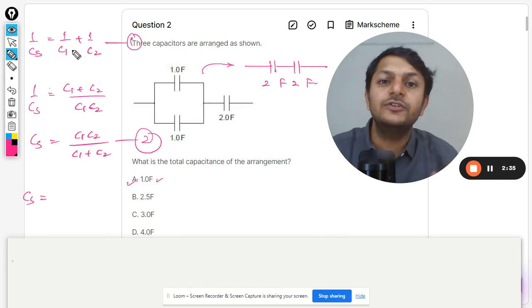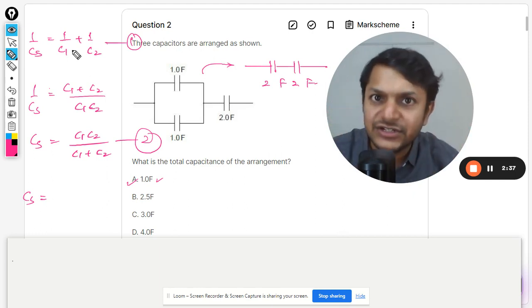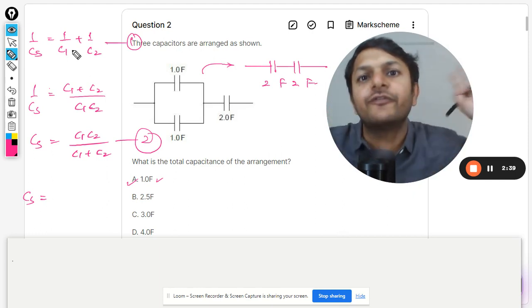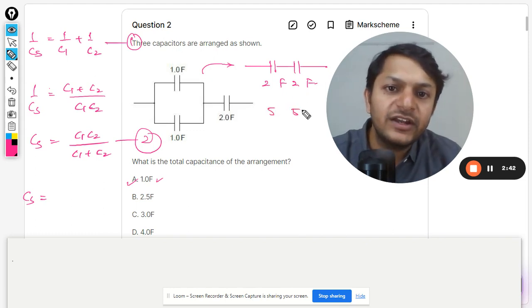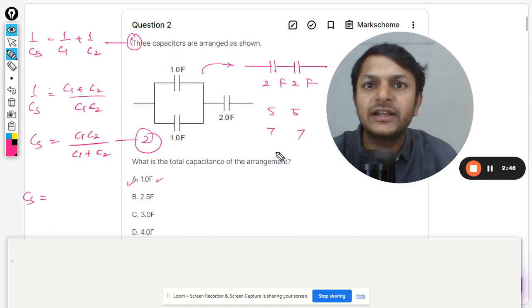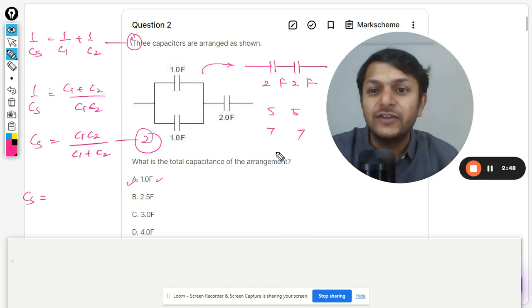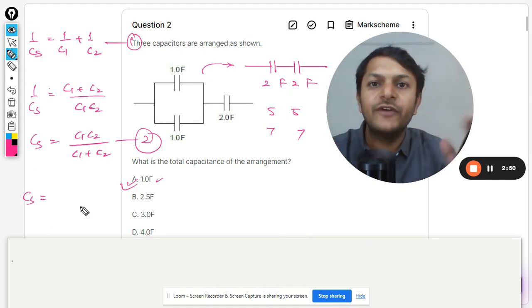When you are using two equal capacitors, the answer is always half of it. So if instead of two, it is five here and five here, the answer will be 2.5. If it is seven here, seven here, the answer will be clearly 3.5. There is no thinking involved. So the answer will be one farad clearly in this question.